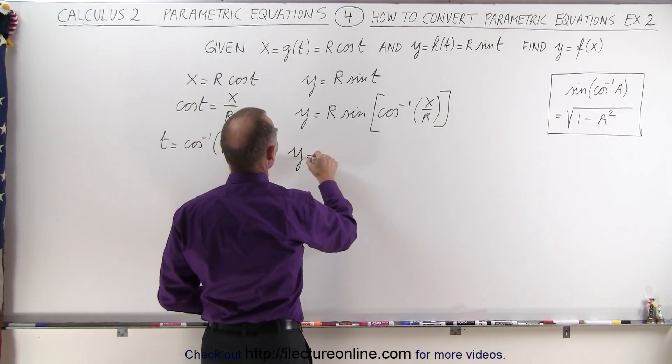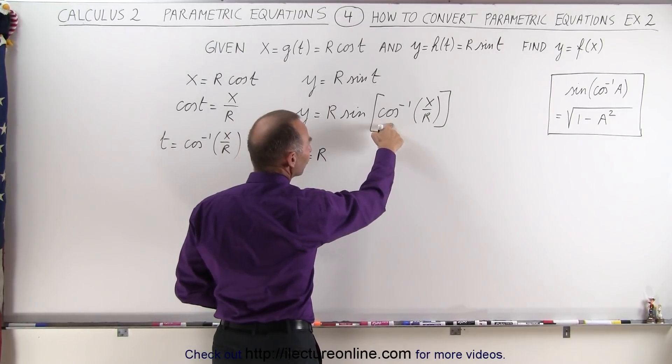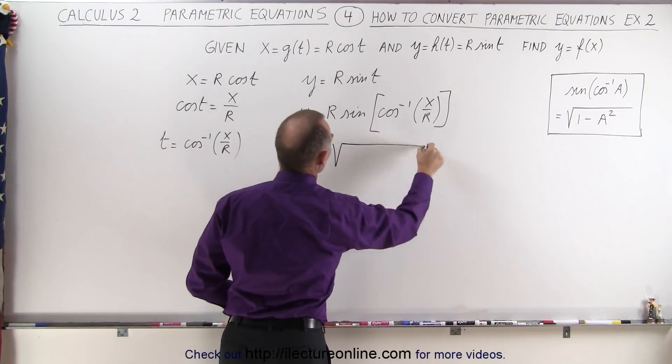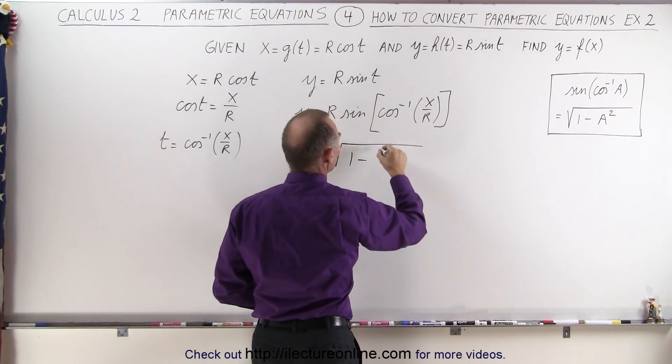So y is equal to r. Instead of the sine of the inverse cosine, we're going to write the square root of 1 minus x over r quantity squared.